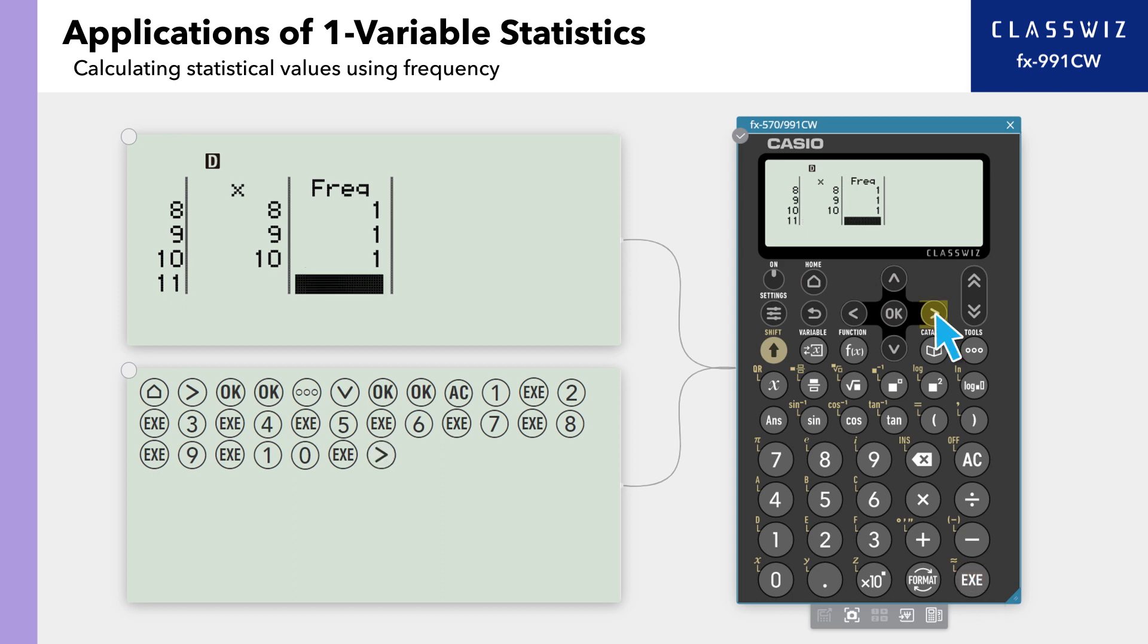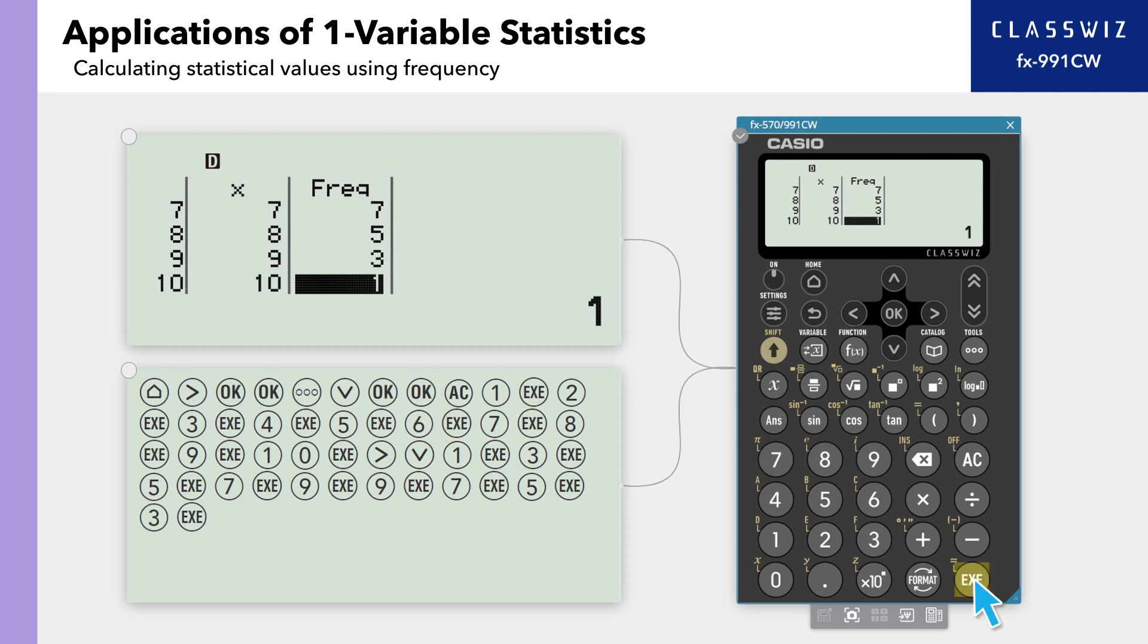Let's enter the frequency of these values. For our example, enter 1st row 1, 2nd row 3, 3rd row 5, 4th row 7, 5th row 9, 6th row 9, 7th row 7, 8th row 5, 9th row 3, and 10th row 1.